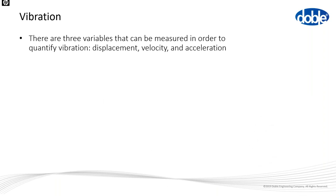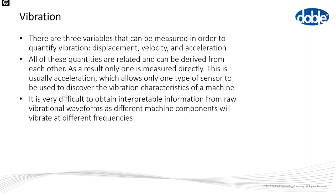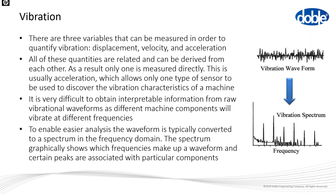Three variables are monitored to quantify vibration: absolute displacement, velocity, and acceleration. All are related and can be derived from each other, so we typically only measure one — usually acceleration, using a small accelerometer. Raw waveforms can be quite noisy and difficult to interpret, so we typically convert the raw waveform into a frequency domain graph, similar to our EMI and motor current signature analysis techniques.